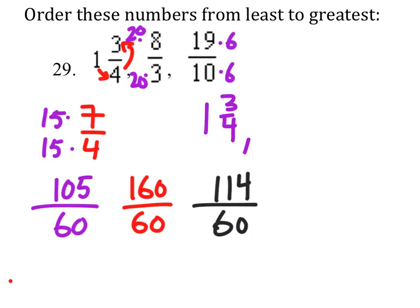The next biggest one is 19 over 10. And finally, the biggest one would be 8 thirds.